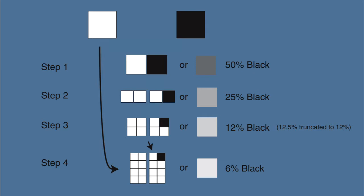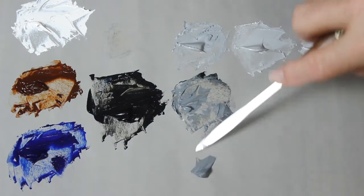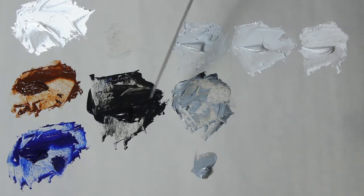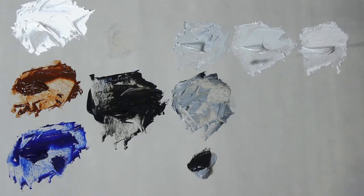Now I'm going to build a dark gray. I'll start by taking some of my 50 percent gray and moving it over here. This time, however, I'll pull an equal amount of black into the mix. This will be my 75 percent black mixture.